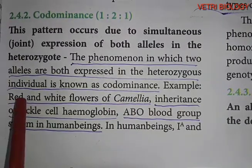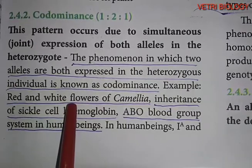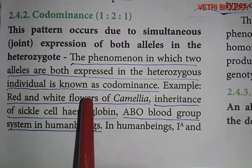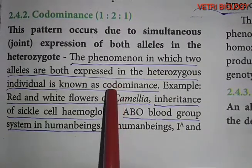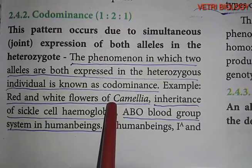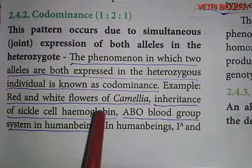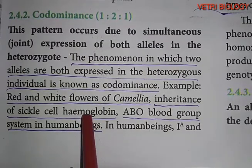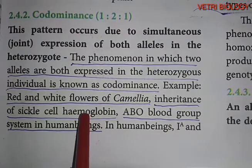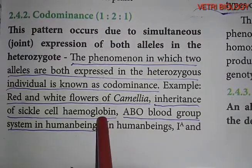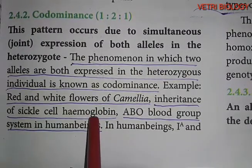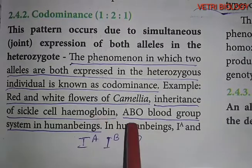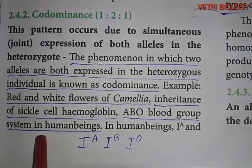An example of co-dominance is the red and white flowers of Camellia. When a red-flowered Camellia plant is crossed with a white-flowered Camellia plant, the F1 generation shows a mixed double-color pattern — that is, both red and white colors are expressed. Another example is the inheritance of sickle cell haemoglobin. Sickle cell anaemia is a blood cell disorder where normal round-shaped red blood cells become crescent-shaped. The heterozygous condition shows both round shape and sickle shape.